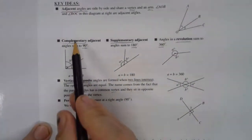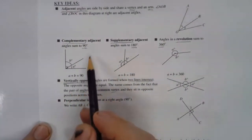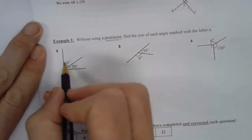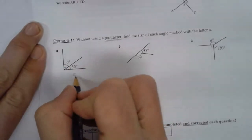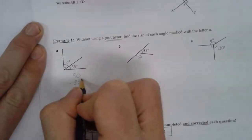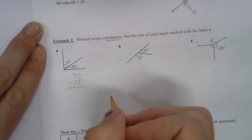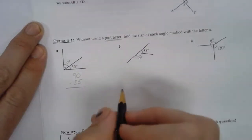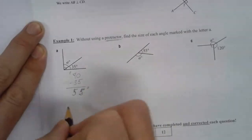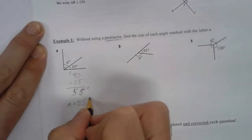So they will add up to 90 degrees in total. I know I've got 35 degrees, and I know that that's going to be the difference. So I take 90 degrees, my right angle, and I take 35 off of that, and I'll get my answer, which is 55 degrees. So in this case, A equals 55 degrees.